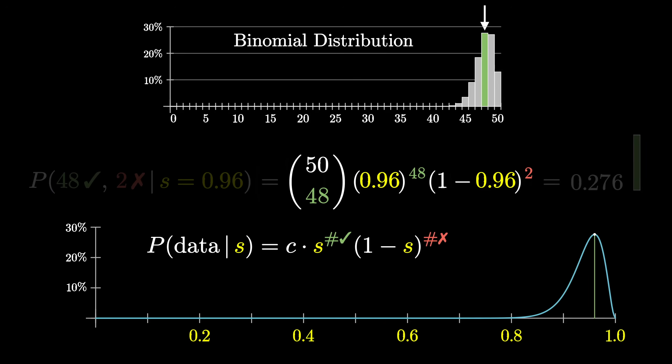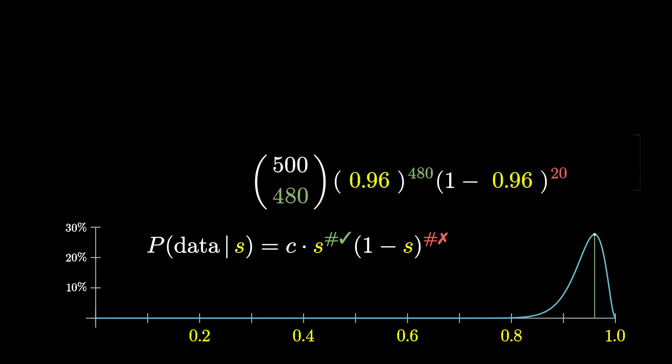In principle, if we had more data, like 480 positive reviews and 20 negative reviews, the resulting plot would still be centered around 0.96, but it would be smaller and more concentrated. A good exercise right now would be to see if you could explain why that's the case.